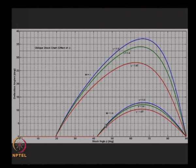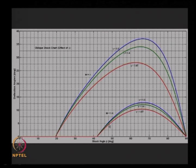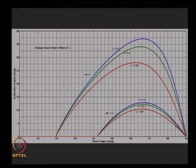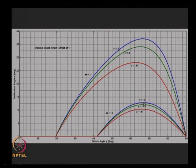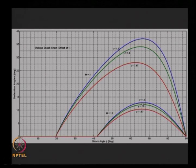For the weak shock: if the gas is less compressible (higher gamma), beta increases. For the strong shock: if the gas is more compressible (lower gamma), beta increases — they have opposite trends. An important third observation: theta_critical is higher for more compressible gas (lower gamma). The curve shifts up overall as gamma decreases. For this course, all you need to know is the curve shifts up as gamma decreases.